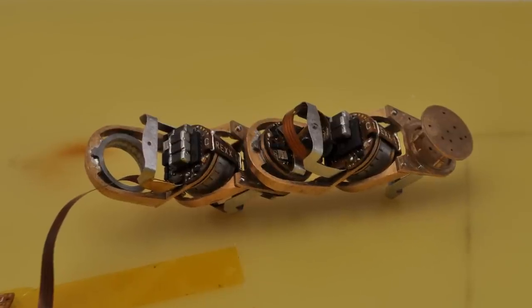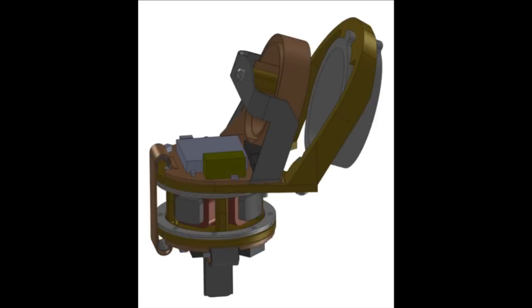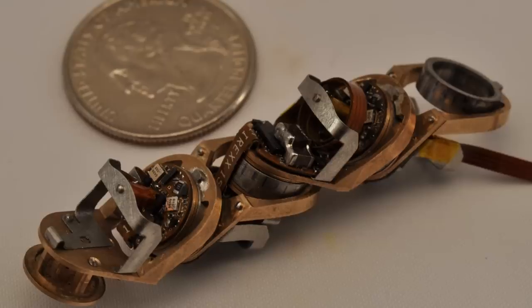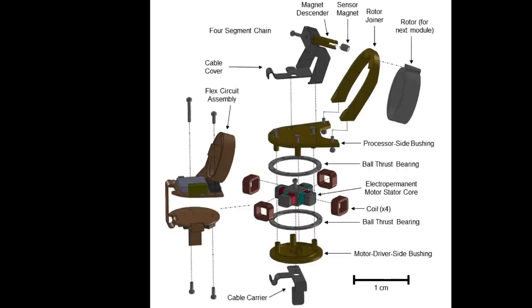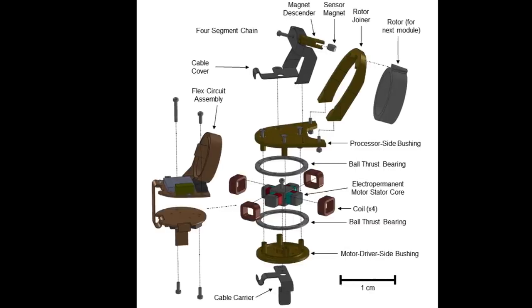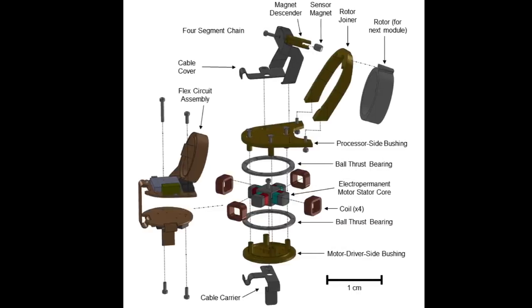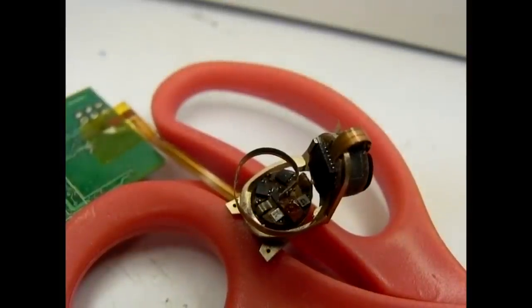Once we had the motor working, we designed the rest of the mechanical protein. It's basically a chain of motor rotors and stators, the rotating part and the stationary parts, interlocked together with a flexible circuit wrapped around it for power and control. We had to learn watchmaking techniques to build the prototypes, which was fun.